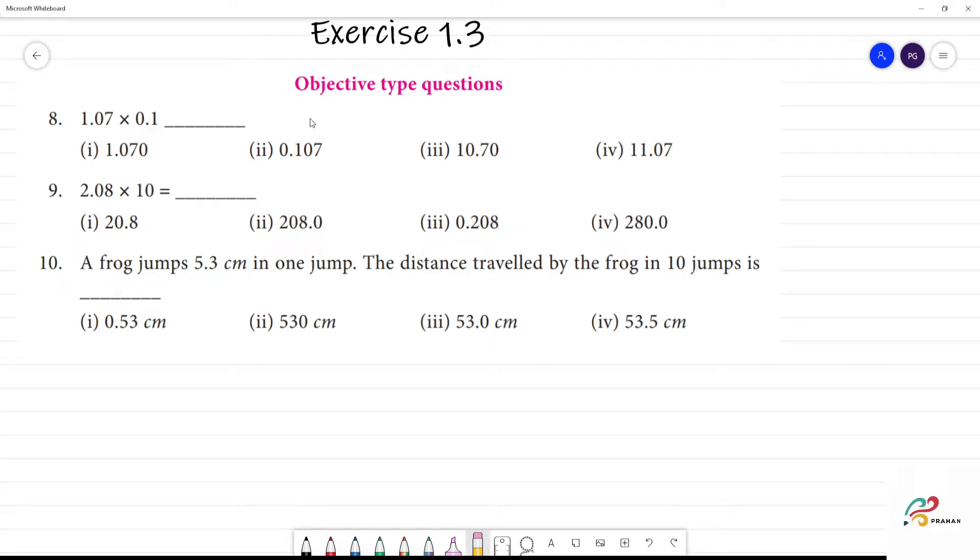Exercise 1.3, objective type questions. First one, number 8: 1.07 into 0.1.